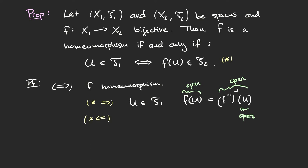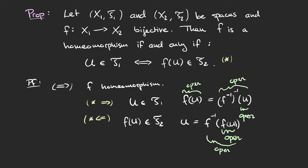For the other direction of condition star, we assume f(U) is open in T2 and need to show U is open in X1. We note that U equals the preimage under f of f(U). Since f(U) is open and f is continuous, the preimage of this open set under f is again open — so U is open. This completes the proof that if f is a homeomorphism, condition star holds.